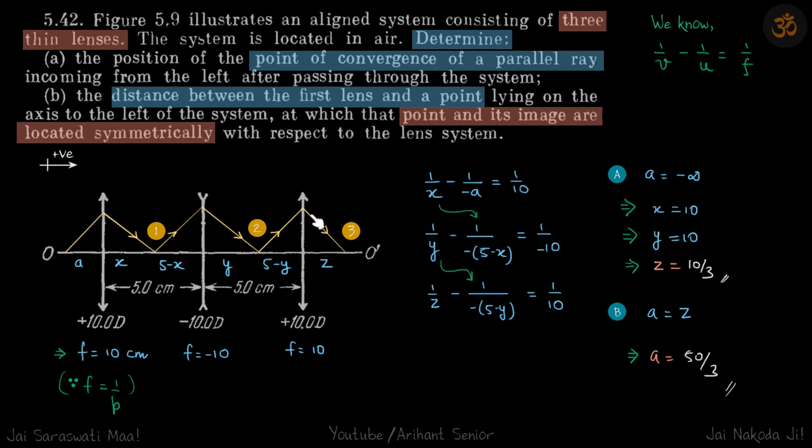This is a converging lens, diverging and converging. Let's say the object is at a distance a and after passing through the first converging lens, the image forms here which is at a distance x from the first lens.